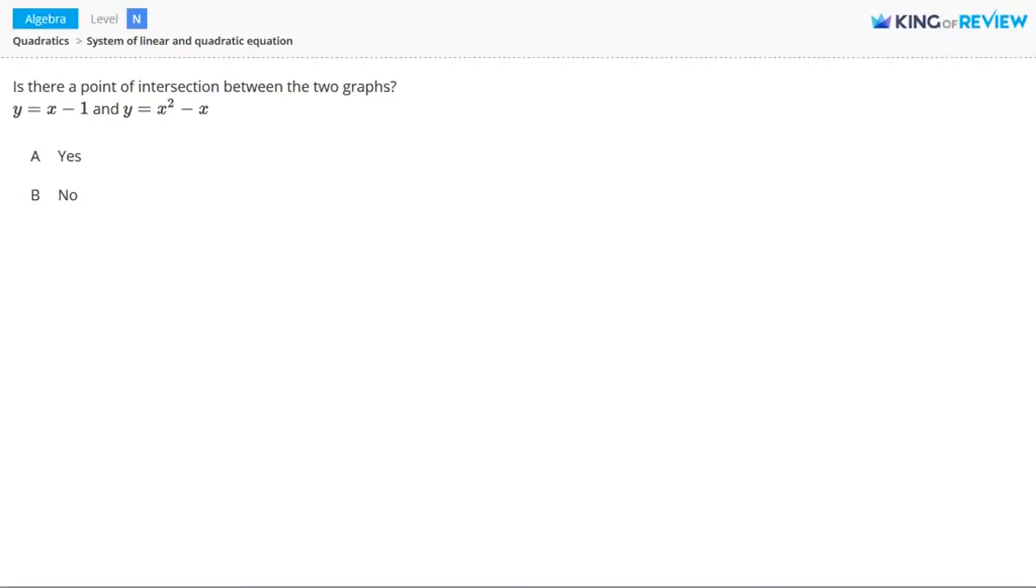One method for solving this problem is to use substitution. You can use substitution to solve for x algebraically, and if you get a real number for the x value, then you know that there is indeed a point of intersection between the two graphs. So let's do that, let's use substitution.